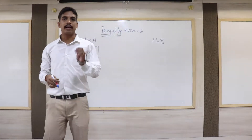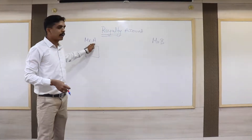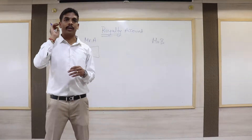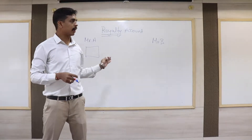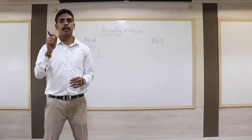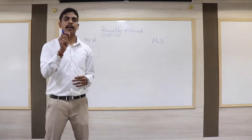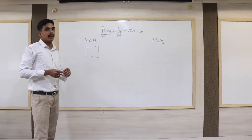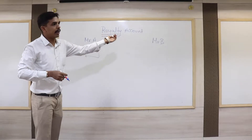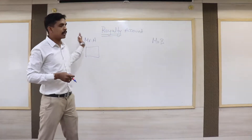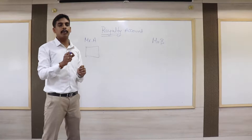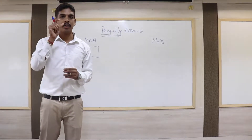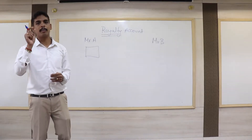Let us take another example. Mr. A is an author. He writes a book but he doesn't have any idea about publishing it. So he approaches Mr. B, who is a publisher, and Mr. B agrees to publish the book written by Mr. A. The amount given by Mr. A to Mr. B for publishing the book is called Royalty — specifically, it is called copyright royalty.